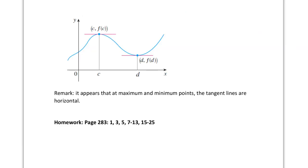It appears that maximum and minimum points occur where the tangent lines are horizontal — both the local maximum and local minimum on the graph have horizontal tangent lines. There won't be an infinite number of such points, so this idea will help us narrow down where these maximum and minimum points are. We'll look at this in more depth next time. For now, check the homework on page 283 to get familiar with these ideas of minimums and maximums. Thanks for watching.